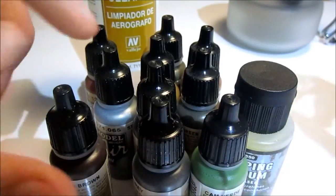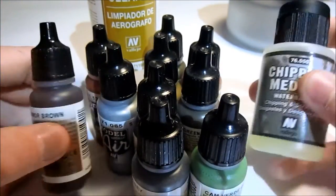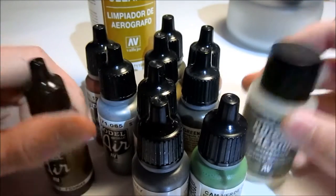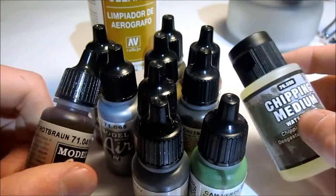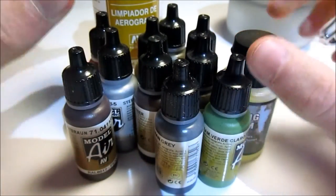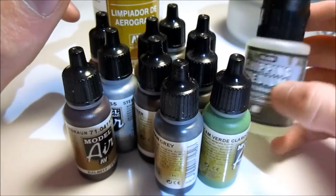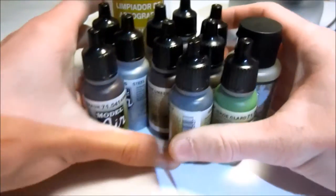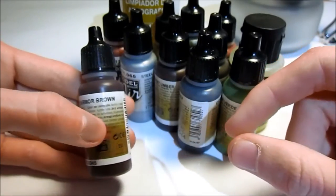Hey everyone and welcome back to part 2 of my airbrush unboxing. Today I received a new package which includes all this, which is a paint cleaner and some chipping fluids. So what colors do I have? I have armor brown which is a camouflage for German tanks, German grey, I have camouflage light green.